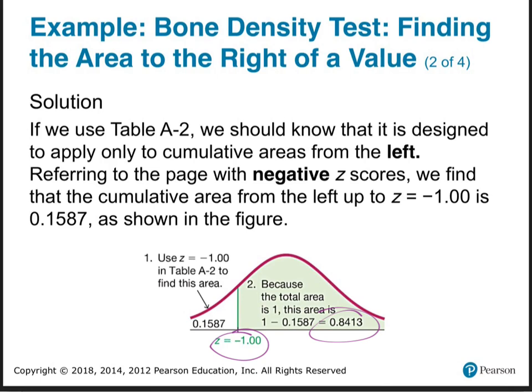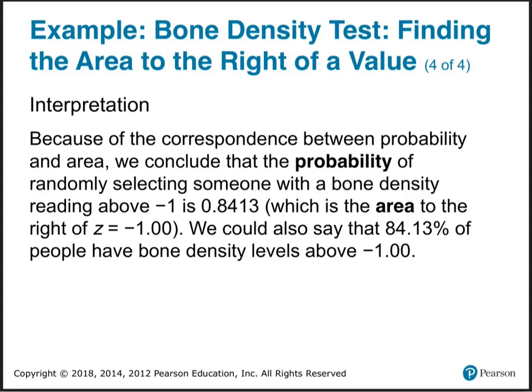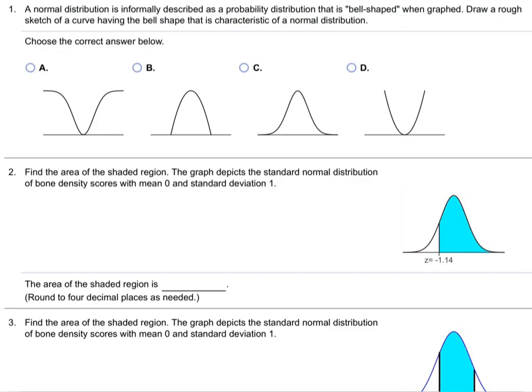What you're going to do on your calculator — we'll do this Wednesday — is you'll put in this Z-value and put in like infinity here, basically, and say from here to infinity. I don't want to confuse you with the other thing, so let's just move on. Interpretation: 84.13% is above. And that's the lecture.